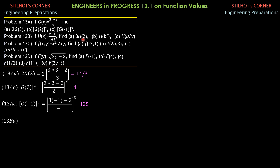3 times h(2) is 3 times (2 minus 1) over (2 plus 1), which is 3 times 1 over 3, giving us 3 over 3. So that is 1.